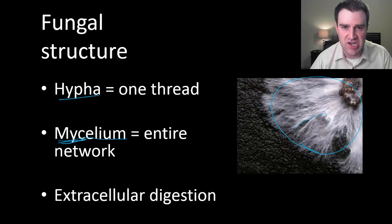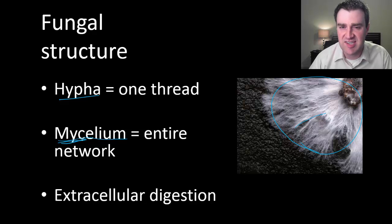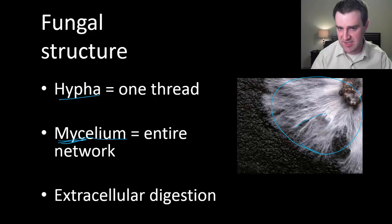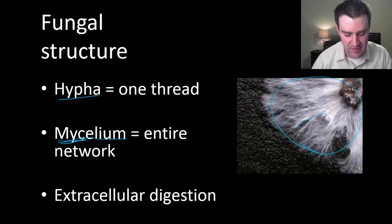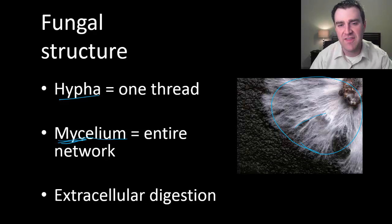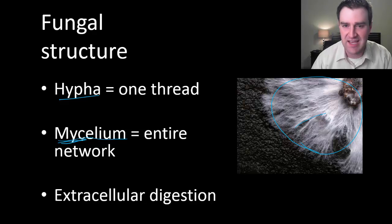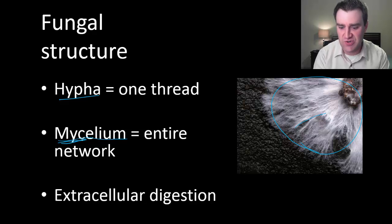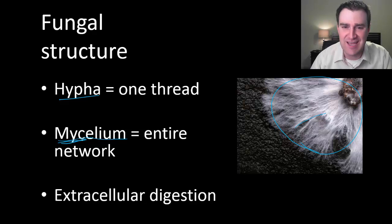Fungi have a very different mode of digestion than us animals, because they're going to digest things outside their bodies — extracellular digestion. Outside their own cells they're going to digest. Once they surround the food source with their hyphae, their hyphae are just going to secrete digestive enzymes outside their bodies to start breaking down the food, and then they can selectively take up whatever they want from that digestion. It's kind of like if you went down to the lunchroom and you just spat all over your food, let those digestive juices break your food up into smaller compounds, and then lapped up whatever you wanted.